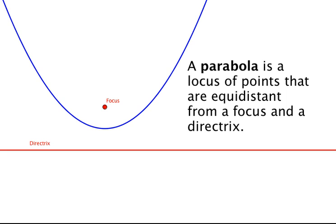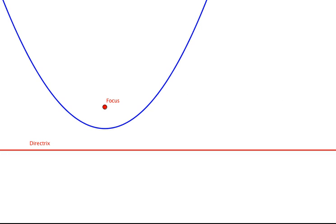So let's start with an example. We're going to take this parabola where we already know the focus and the directrix, and we're going to see how the points on the parabola are equidistant from this point and this line.